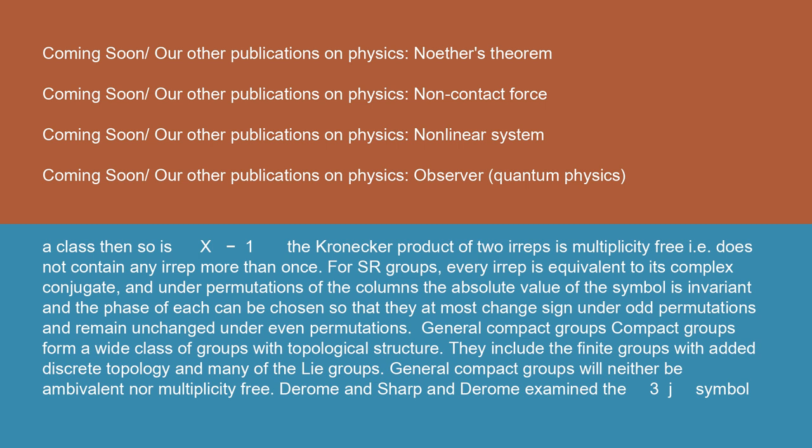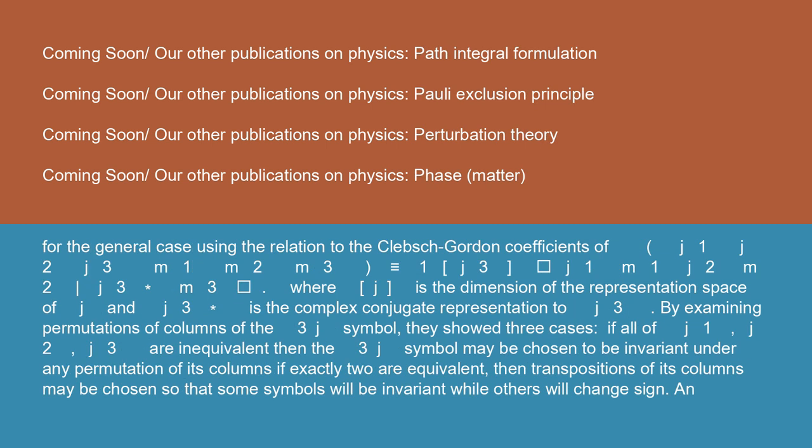General compact groups: compact groups form a wide class of groups with topological structure. They include the finite groups with added discrete topology and many of the Lie groups. General compact groups will neither be ambivalent nor multiplicity-free. Derome and Sharp and Derome examined the three J symbol for the general case, using the relation to the Clebsch-Gordon coefficients: (J1 J2 J3; M1 M2 M3) = (1/√d_J3) * <J1 M1 J2 M2 | J3*M3>, where d_J is the dimension of the representation space of J and J3* is the complex conjugate representation to J3. By examining permutations of columns of the three J symbol, they showed three cases.